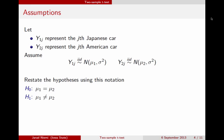We can rewrite the hypotheses using the notation we've introduced. The null hypothesis is that mu1 and mu2 are the same, and the alternative is that they are different. Alternatively, we could subtract mu2 from both sides and say the null is that mu1 minus mu2 equals 0, and the alternative is that mu1 minus mu2 is not equal to 0.